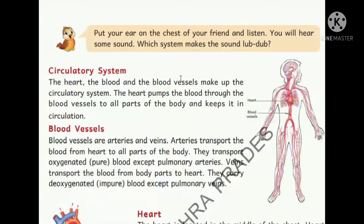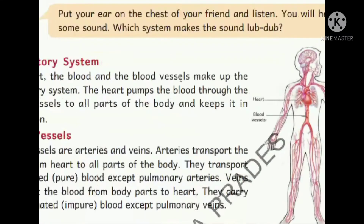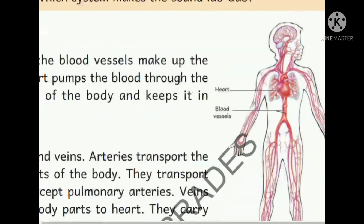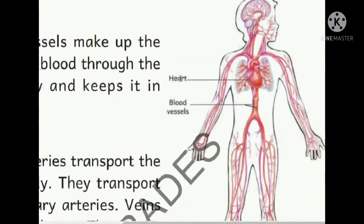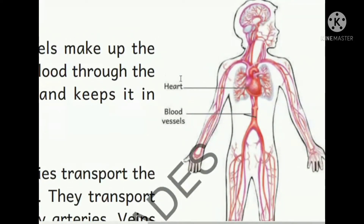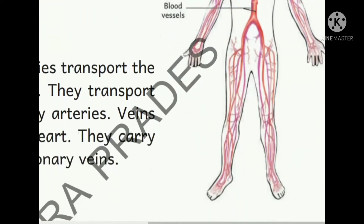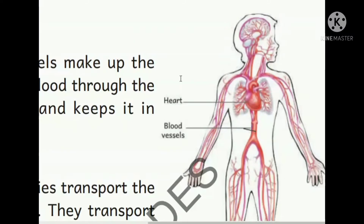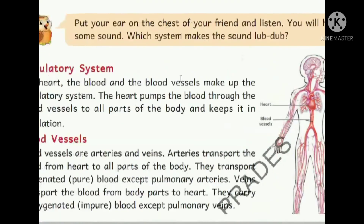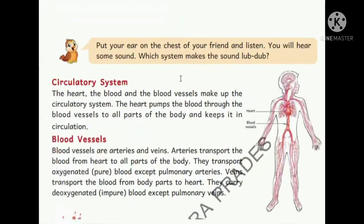Now going to the circulatory system. We take food and oxygen - how does it transfer to the body? Just like our house has wires for power supply, our body has a nervous system and a transport system. The main hero of the transport system is the heart - a pumping organ - and blood vessels. The heart pumps blood into blood vessels.